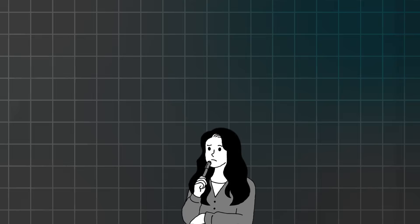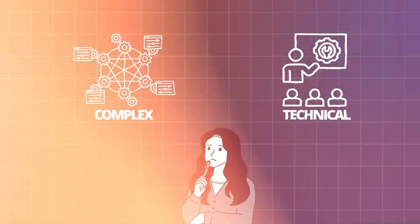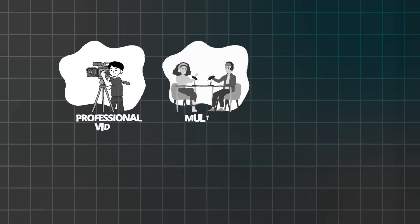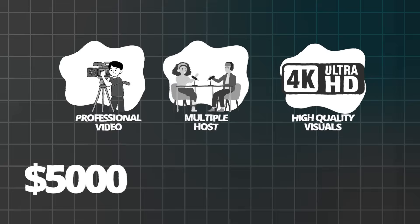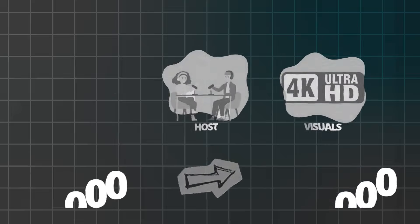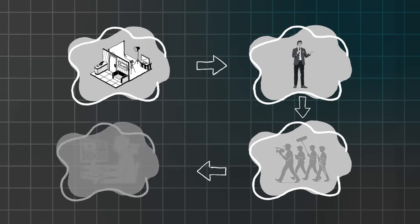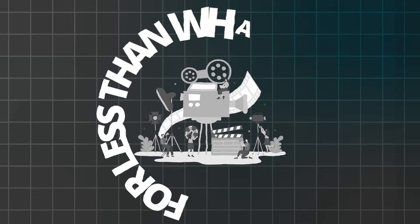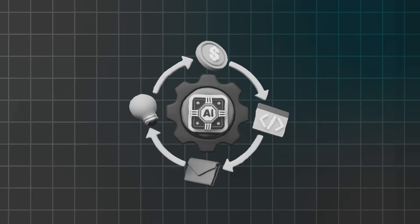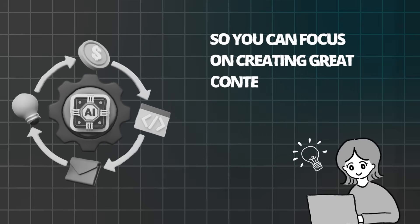I know some of you might be thinking this sounds incredibly complex, or that you could never learn all these technical skills. I felt exactly the same way when I started. But here's the amazing reality: traditional podcast production with professional video, multiple hosts and high-quality visuals typically costs anywhere from $5,000 to $15,000 per episode when you factor in studio rental, professional hosts, camera crews, and post-production editing. With this AI tool, you get access to all of these professional capabilities — realistic AI hosts, perfect lip sync technology, professional environments and motion graphics — for less than what you'd spend on a single traditional episode. Plus, you have complete creative control and can produce content on your own schedule. The learning curve is so much more manageable than I expected, and the AI handles all the complex technical aspects automatically so you can focus on creating great content and building your audience.